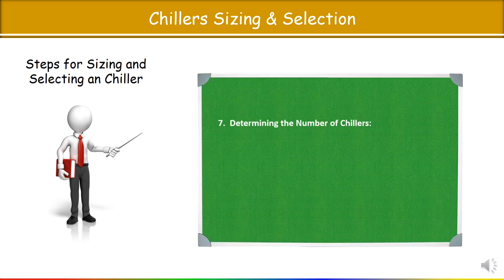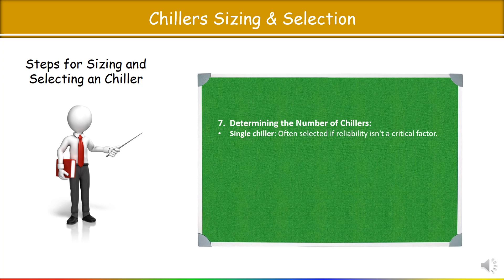The next step is to determine the number of chillers. A single chiller is often selected if reliability is not a critical factor. For a small cooling load, typically less than 100 tons, a single chiller is preferred — for example, small commercial buildings, retail spaces, or residential applications. A single chiller has lower initial capital cost and requires less physical space than multiple units.